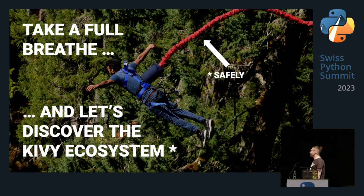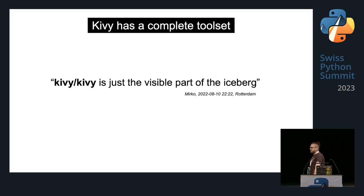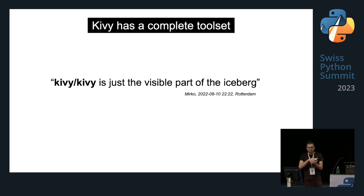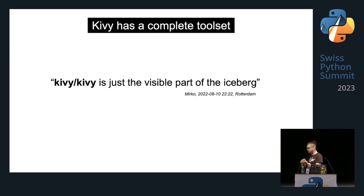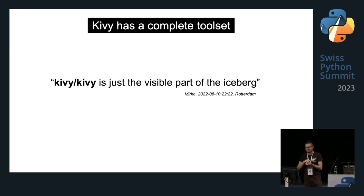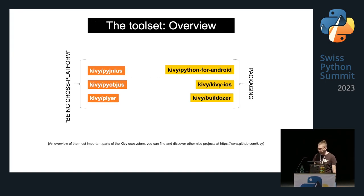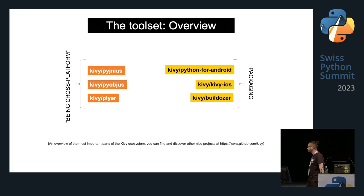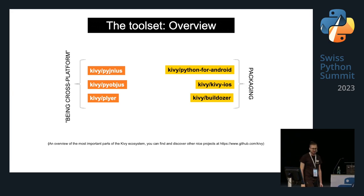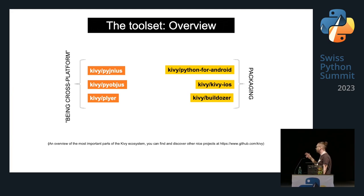Let's discover the Kiwi ecosystem. Kiwi has a complete toolset, because the UI part is only a small part of the whole ecosystem. The ecosystem has two parts: the binding-to-core-platform part and the packaging part. The core platform part includes PyJNIus, PyObjus, and Plyer. The packaging part includes Python-for-Android, Kivy iOS, and Buildozer.